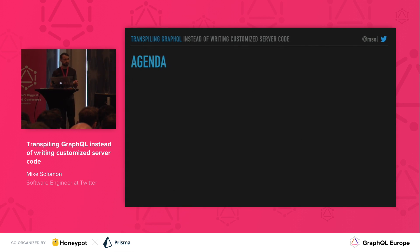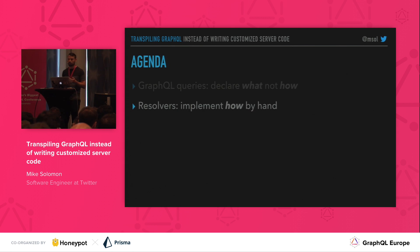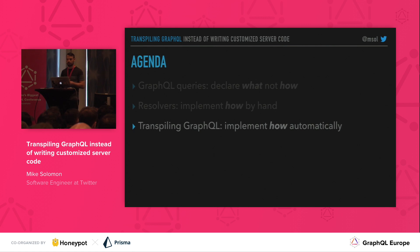First, a quick agenda so you know what to expect. Today we'll recap some properties of GraphQL that are relevant for transpiling and introduce an example. We'll talk about how GraphQL implementations typically work and which parts a developer has to implement. And lastly, we'll talk about how we might be able to skip doing all of that in favor of letting the computer do it for us.